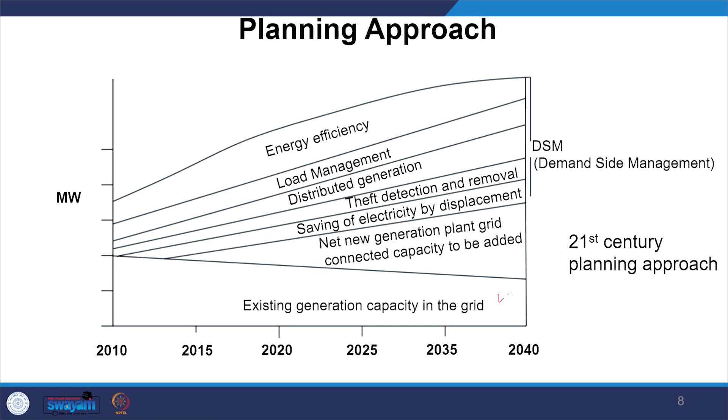Now let us look at the 21st century planning approach. We had certain loads which keep on increasing over the years, and naturally the megawatt demand curve is going to spike. But the question is the order in which we address energy demand. First, we must work out energy efficiency mechanisms — for example, replacing conventional lighting with LEDs can reduce energy consumption by close to 60% — which allows us to reduce the growth in energy demand for a given period through energy efficiency.